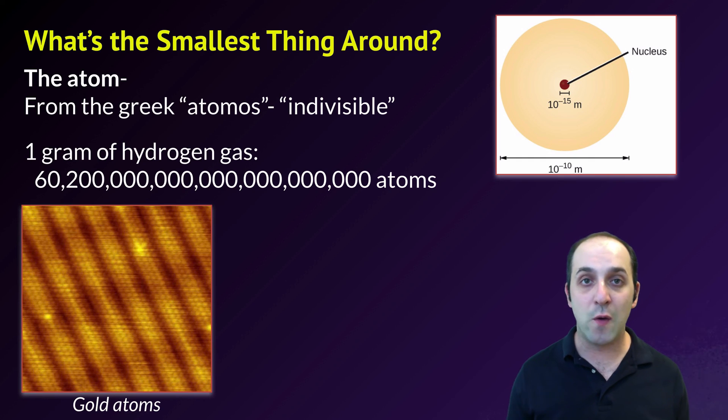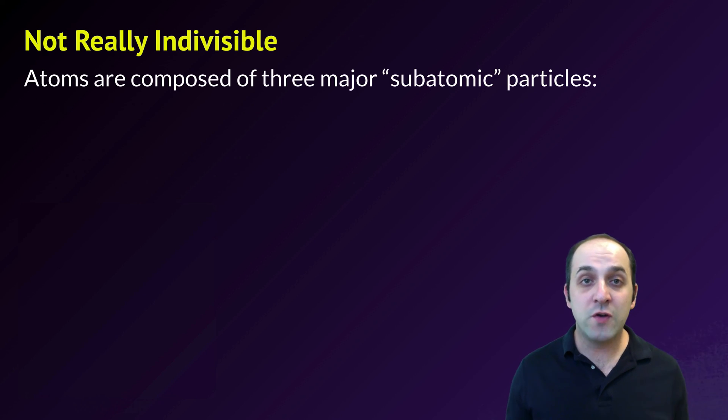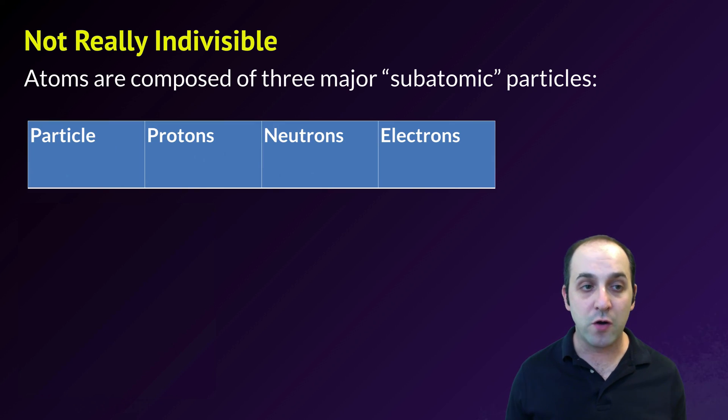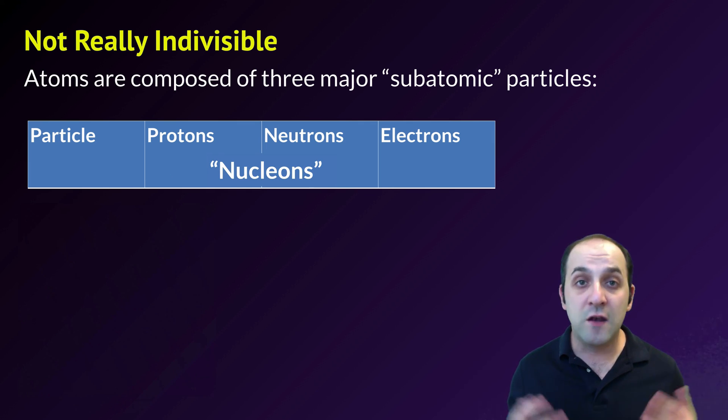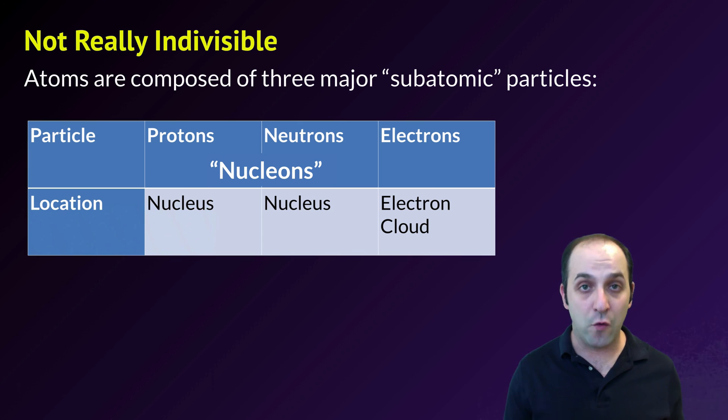We're going to get a little bit below that to the level of the theoretical and talk about the things that we see going on inside of atoms. It turns out that atoms are not actually indivisible. Atoms are actually composed of three major subatomic particles: protons, neutrons, and electrons. Protons and neutrons are both located in the nucleus of the atom, so they're together referred to as an atom's nucleons. Electrons are not located in the nucleus; they're actually located outside in a region called the electron cloud.